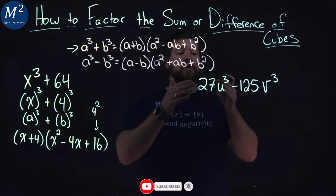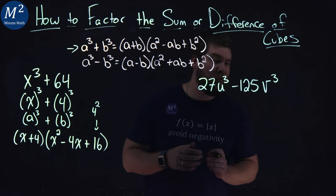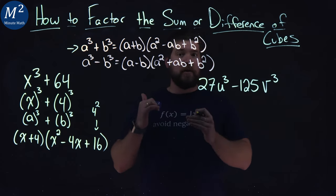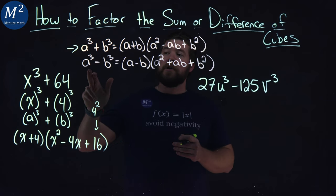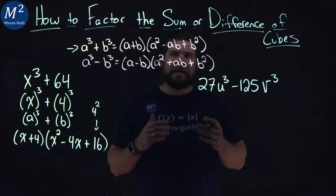We have a 27u cubed minus a 125v cubed. And yes that's my v just so you know. Same idea a little more difficult. We have an a cubed minus b cubed. Subtraction is going on here. We want to rewrite it in that form.